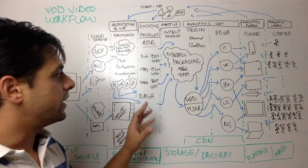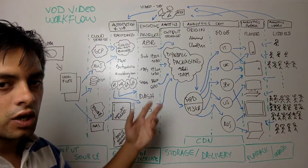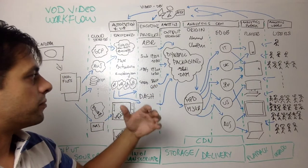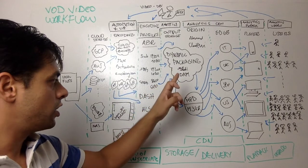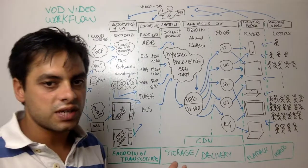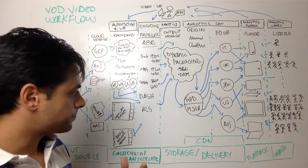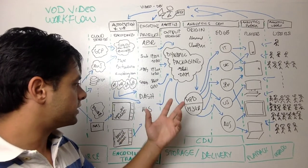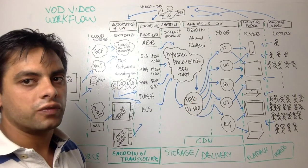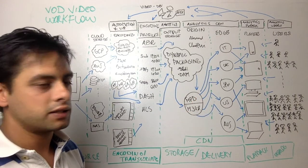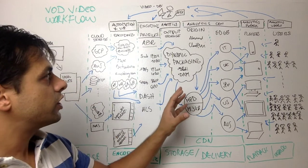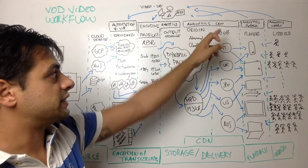The next step is dynamic packaging, which can add in server-side ad insertion or DRM, depending on the use case and business need. The final MPDs — which are the manifests describing how the video should be played — or M3U8 files for HLS, are then delivered via an origin and a CDN.